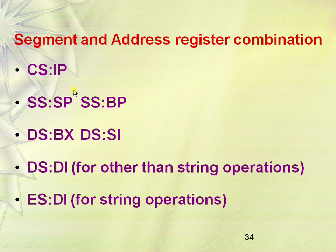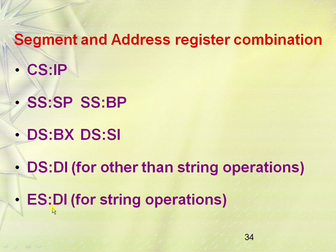To summarize the register pairs: CS:IP gives the physical address inside the code segment; SS:SP or SS:BP gives the physical address inside the stack segment; DS:BX or DS:SI gives the physical address in the data segment; ES:DI is used for string operations and gives the physical address inside the extra segment. This is how the 1 MB memory is divided into segments, accessed using segment and offset registers to obtain the exact physical address where the operand resides.